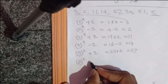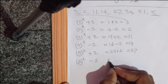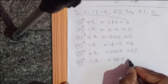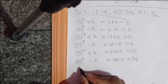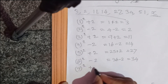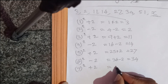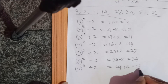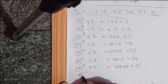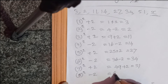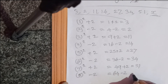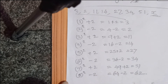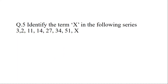So X = 8² - 2 = 64 - 2 = 62. The answer is 62.